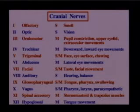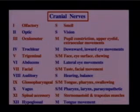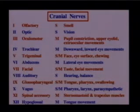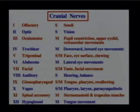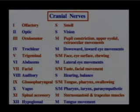Cranial nerve eight is auditory. Nine is the glossopharyngeal nerve — the name tells you what it does: glosso is tongue, pharyngeal for pharynx — it deals with tongue, pharynx, and swallowing. Cranial nerve eleven is the spinal accessory nerve, assessed by asking the patient to shrug his or her shoulders. Cranial nerve twelve is the hypoglossal nerve, which deals with tongue movement. Isn't it interesting that the tongue gets the last word, so to speak?